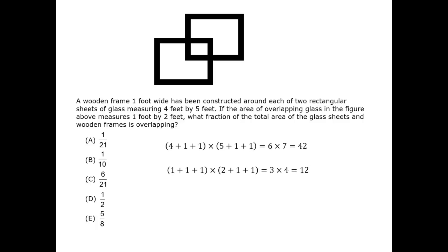The fraction of one rectangle that overlaps is therefore 12 over 42. This stays the same when we consider both frames, since the ratio is identical when we have both. Therefore, the correct answer is 12 over 42, or 6 over 21.